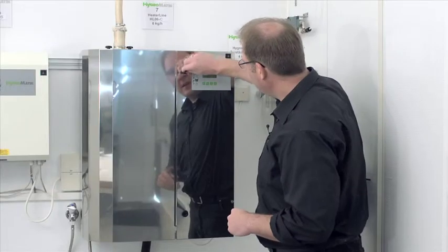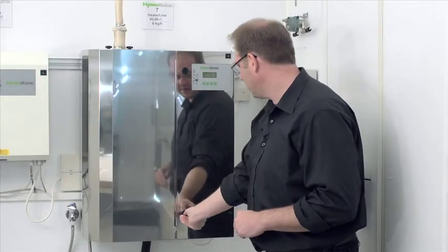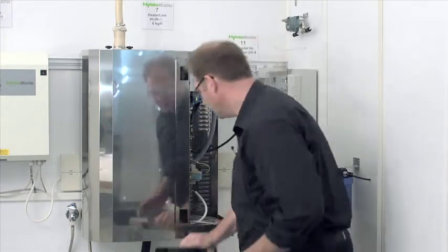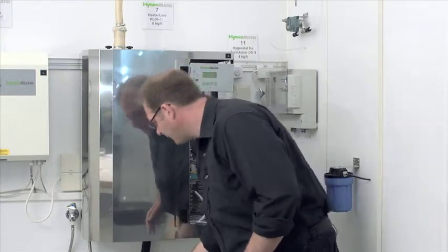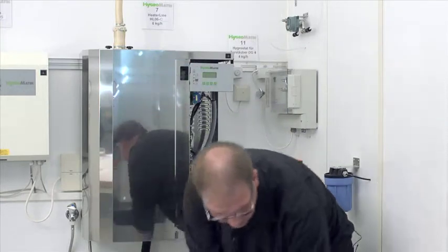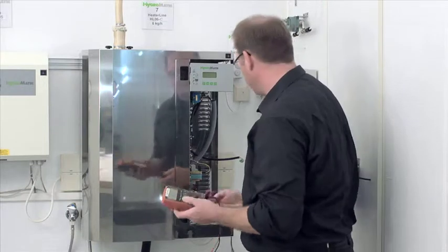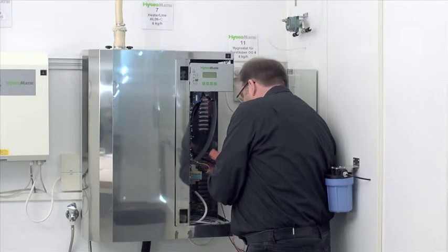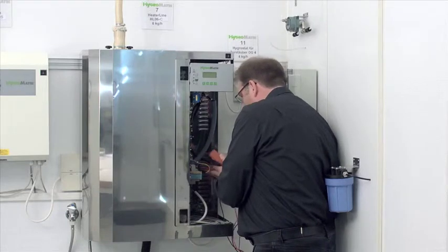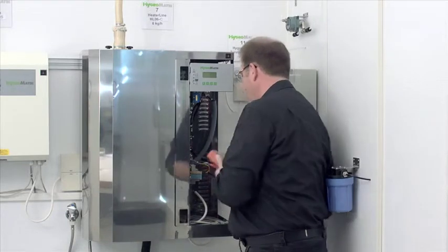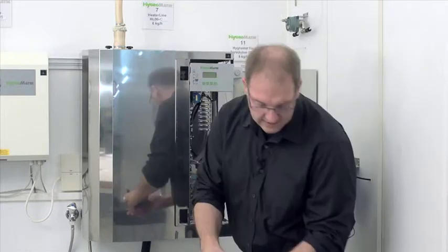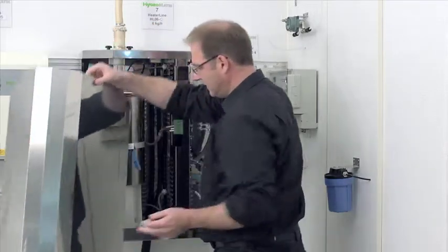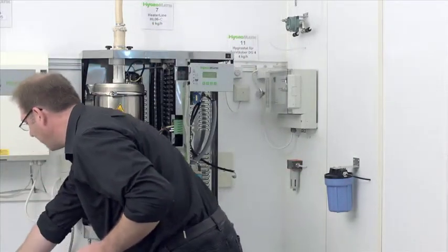Now I'll open the right side of the unit, it's the electrical side. Then I can go about the unit and now I will take off the left cover. That is the steam side where the steam cylinder is seated.